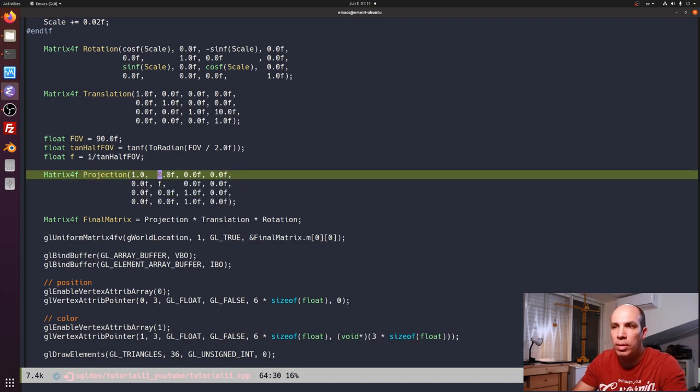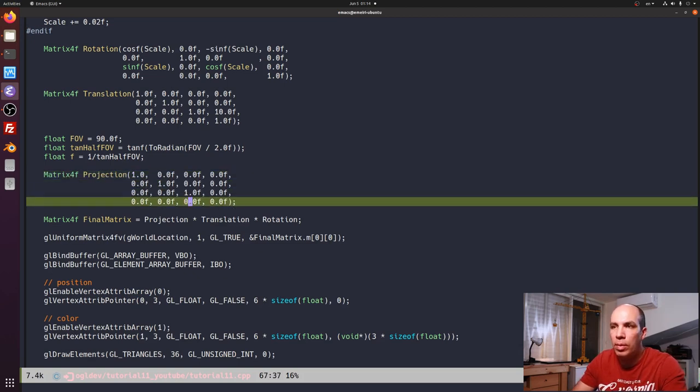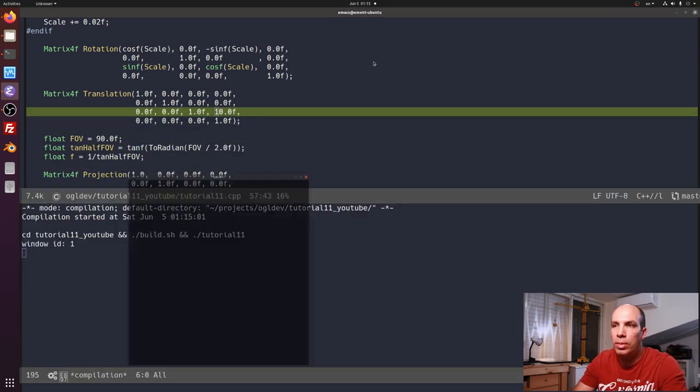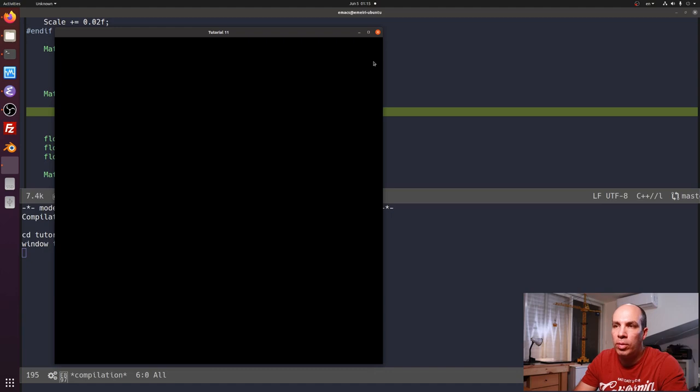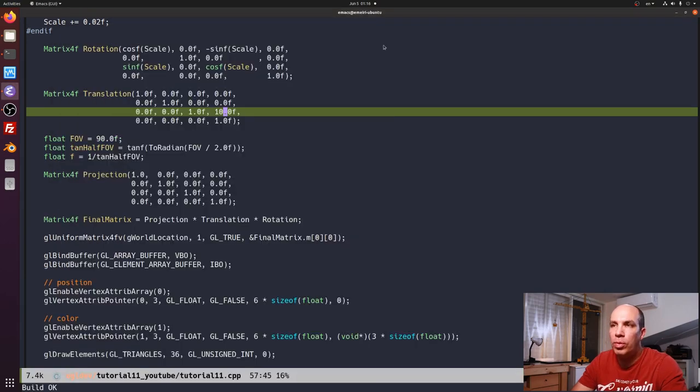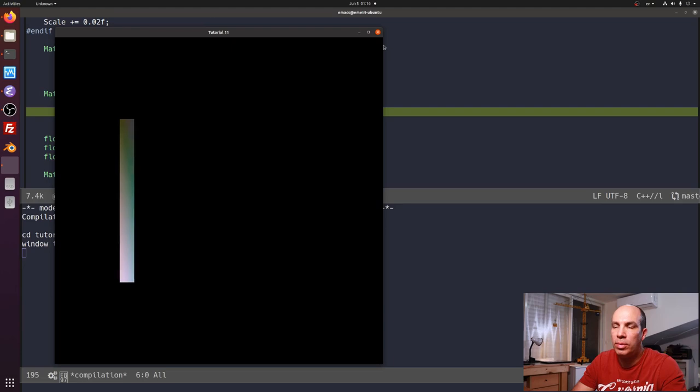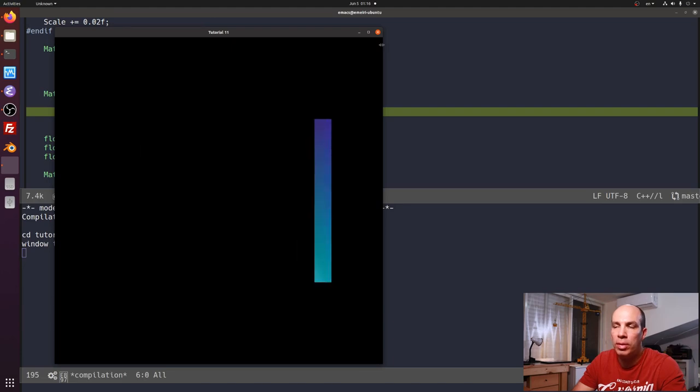Now if we go back to the original projection matrix which was just the identity and we run this like that with 10 added to the z value, now we're not seeing anything. And the reason is that the rasterizer clips away vertices with z value above one. So when you're not using a projection matrix you need to make sure that the z values are between minus one and one. For example if we put in minus one here then we're still seeing something. So we'll talk more about this in the next tutorial.